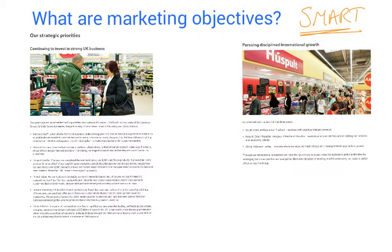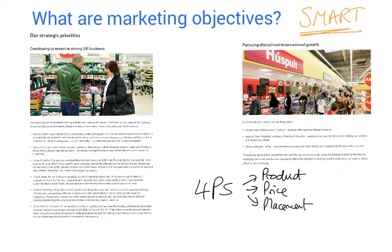If you think about marketing as being the four P's — product, price, placement, and promotion, from the AS course — these are the key elements. You can see they cover an awful lot of Tesco's specific objectives.